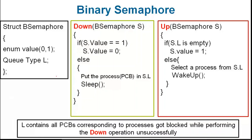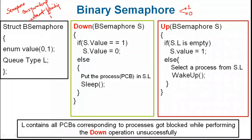We are going to discuss the binary semaphore. As the name suggests, the semaphore will only take two values — either one or zero. A semaphore can be implemented with the busy waiting solution or without busy waiting. What we are discussing here is the without-busy-waiting solution. Busy waiting is not required; if you cannot get the critical section at the moment, you should wait, and when the critical section is free, you will be woken up.